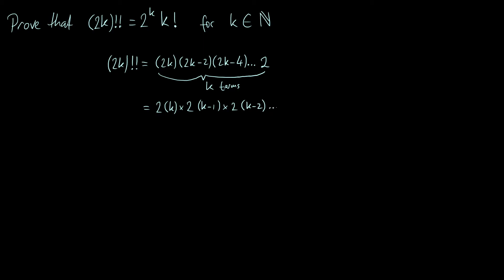And so on, all the way until you get to the last term, which is 2 times 1. But remember that there are k terms, and we just factorized out a 2 from each of those k terms.